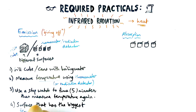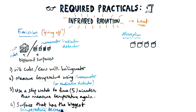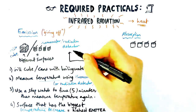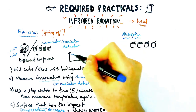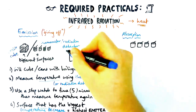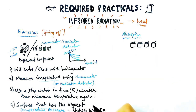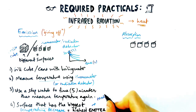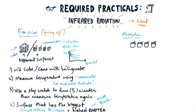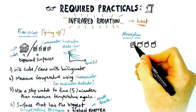We look at our results and compare them. The surface that has the biggest temperature difference — i.e. the highest becomes the lowest — is going to be the highest emitter of infrared radiation. You should know that the highest emitter is expected to be matte black, meaning it is not shiny at all. Sometimes you can see these results plotted on a graph — they all start at the same initial temperature and go down at different rates. The one with the steepest curve would be matte black: the highest emitter with the largest temperature drop.